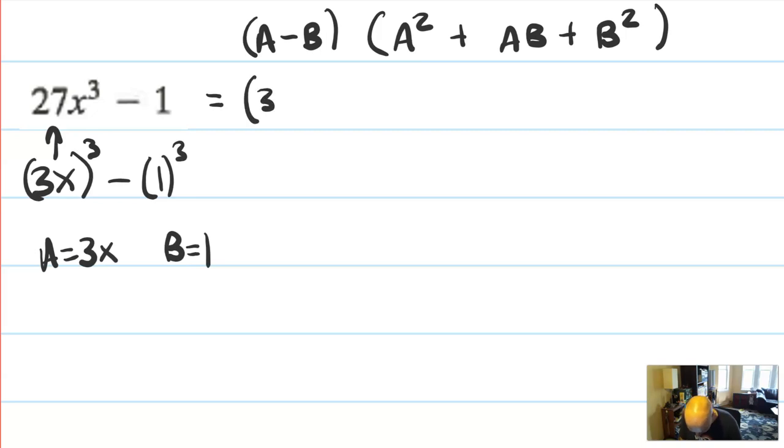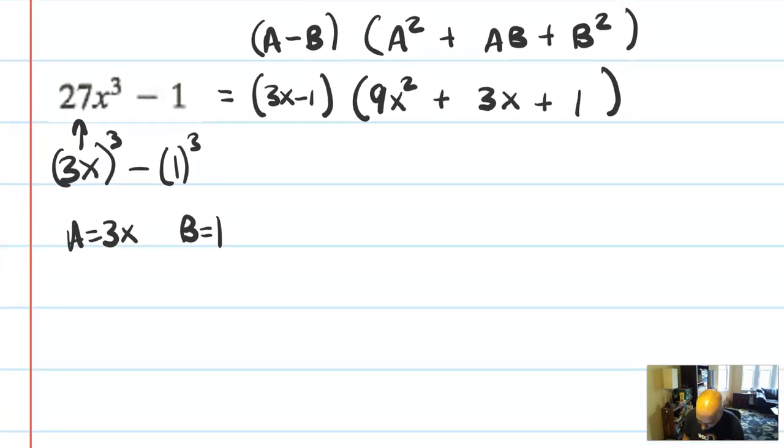So I should have 3x minus 1. That's the a minus b. Then I should have 9x², then ab should be 3x times 1, or just 3x, and then 9x² plus 3x plus b², which is 1. And that should work out. I trust myself enough that I'm not going to foil it back out, but if you really want to check your work, you could multiply that all back out and see if it works out. It should. Let's do another one.